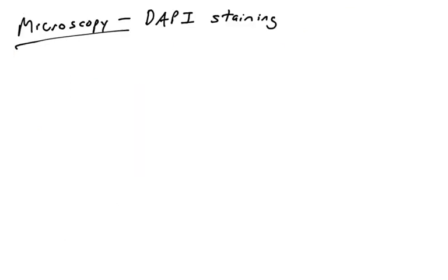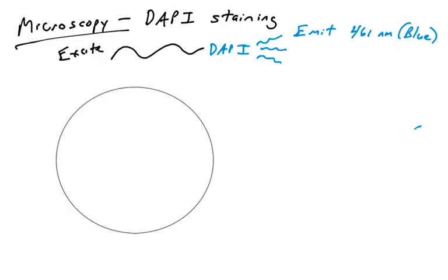Another assay that can be done that is more qualitative is a microscopy assay that looks at DAPI staining. What's DAPI? DAPI is a fluorescent molecule. Fluorescent molecules are excited by one wavelength of light and emit another wavelength of light. This molecule called DAPI emits light in the blue wavelength range—when it's excited, it emits blue.